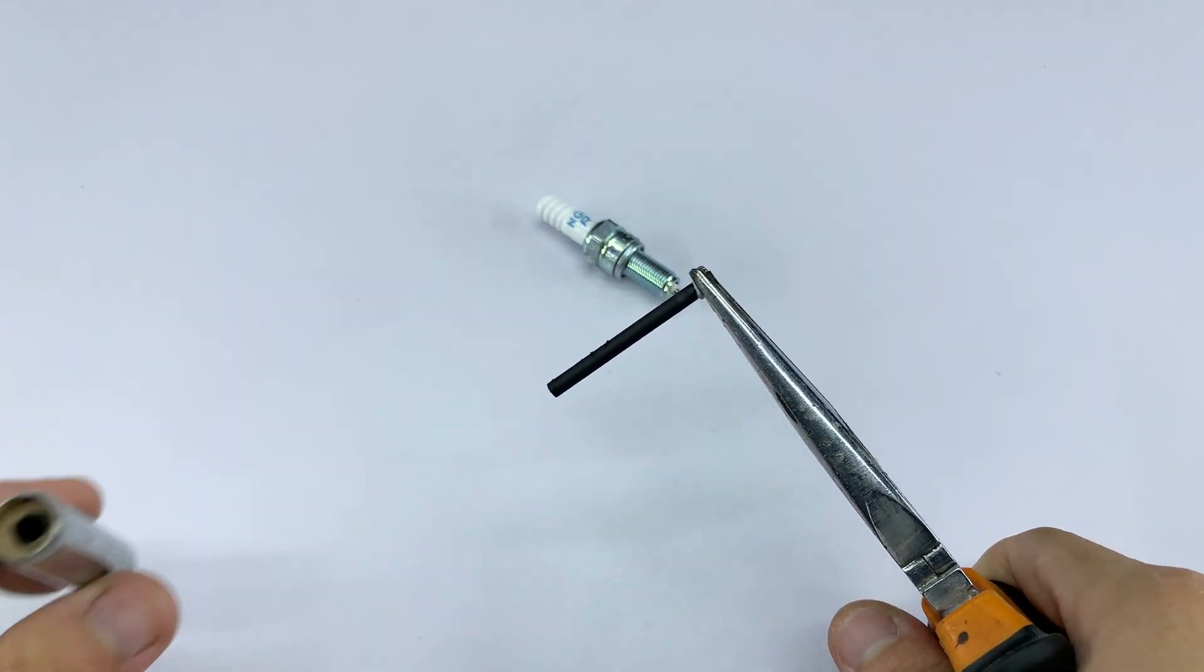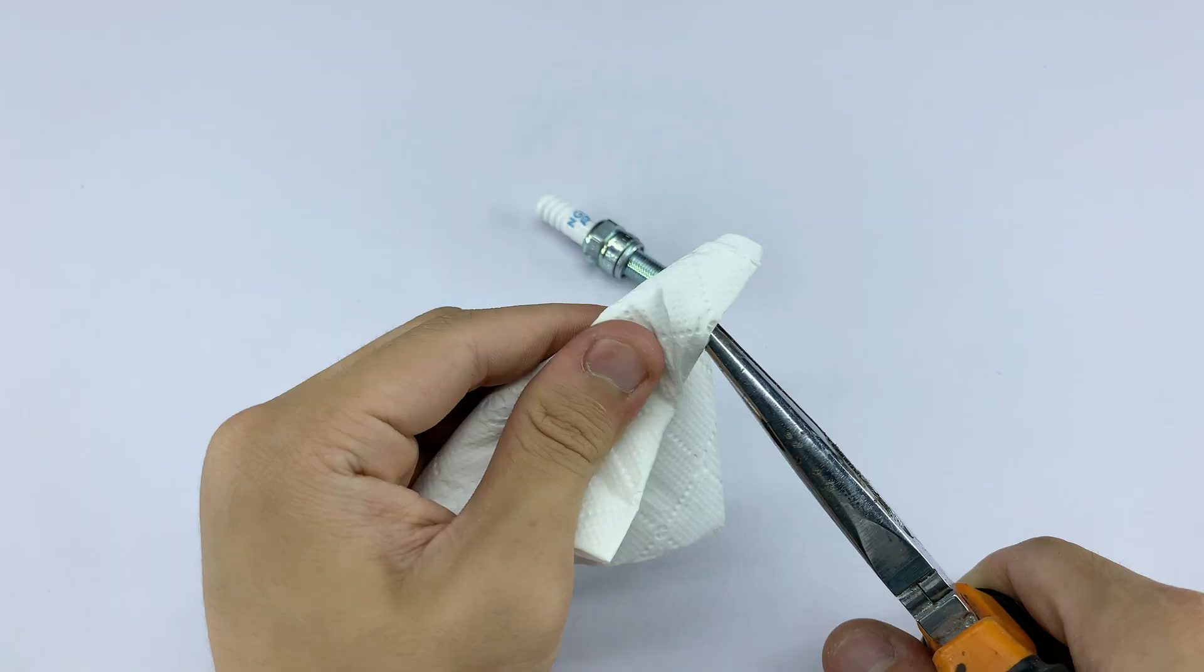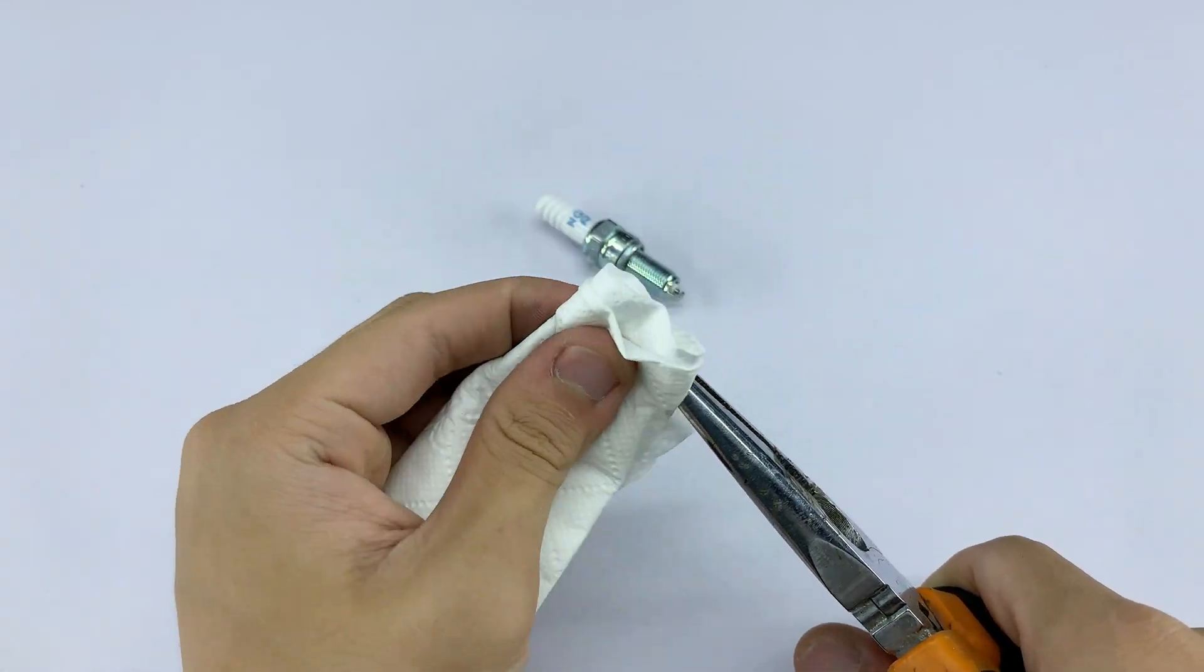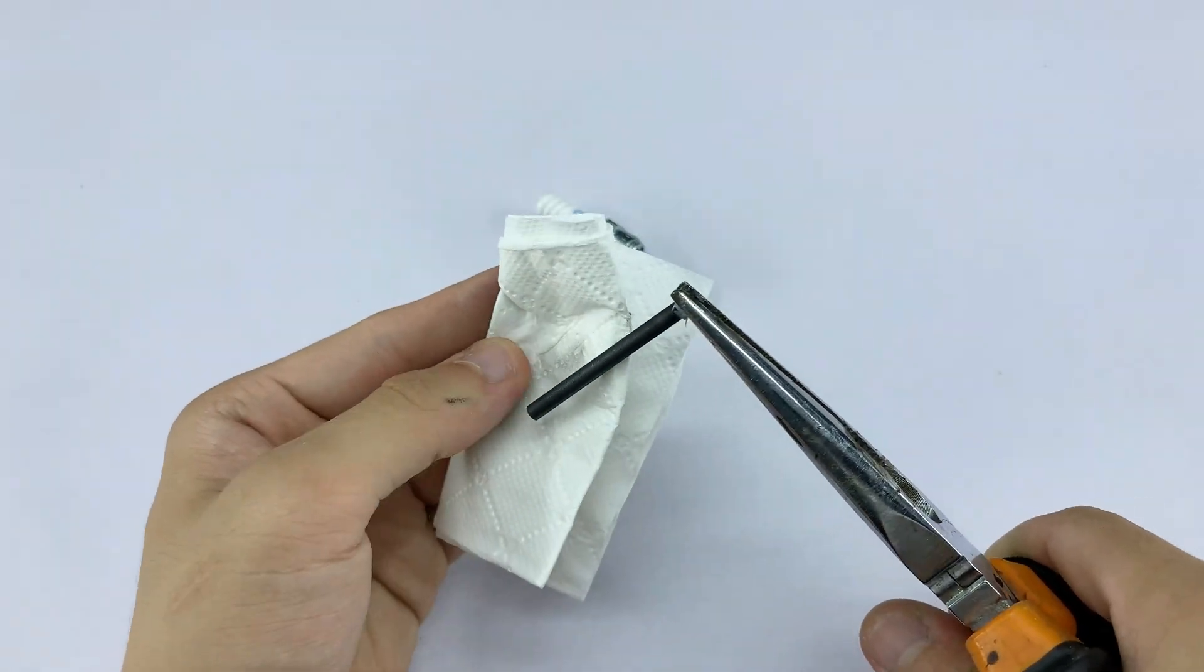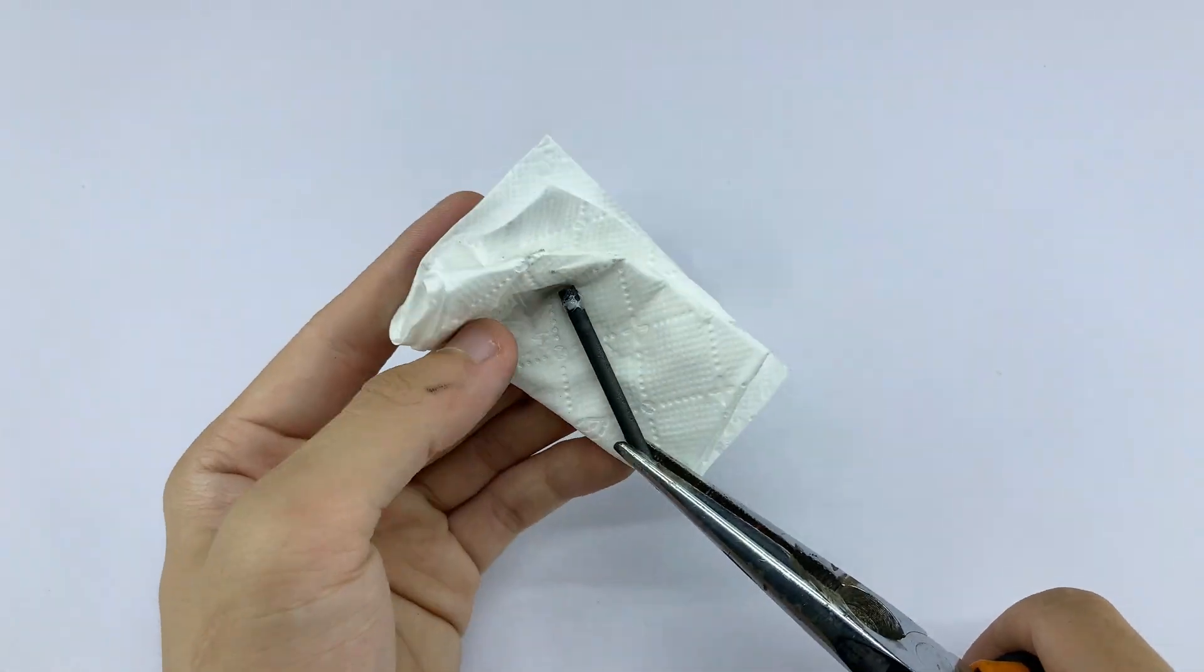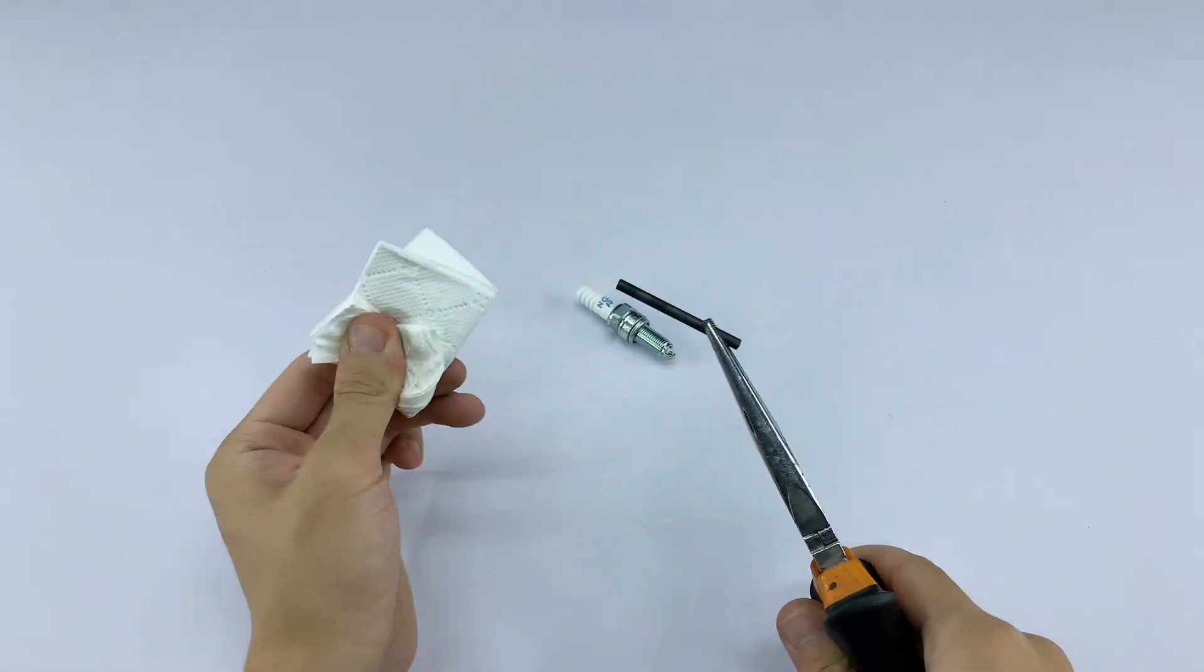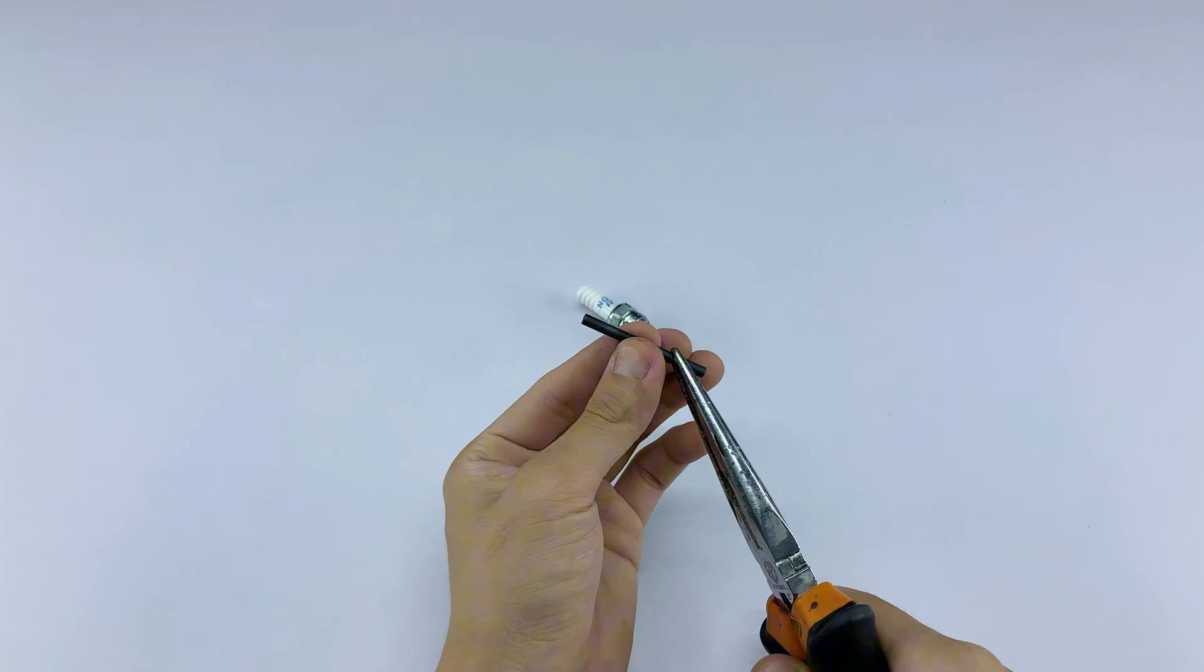So tell me, did any of you ever peel open a battery when you were young, just to see what was inside? Drop a comment below and share your story. I'm going to clean up this battery first, then secure it onto the drill to smooth out the tip with some sandpaper.